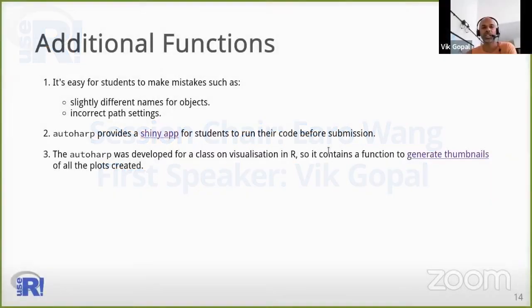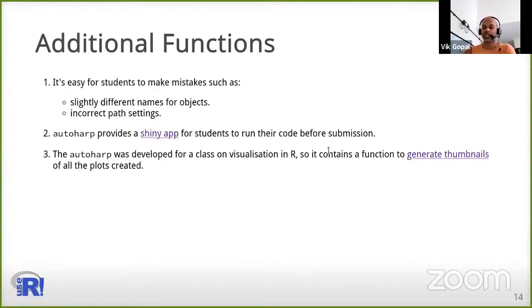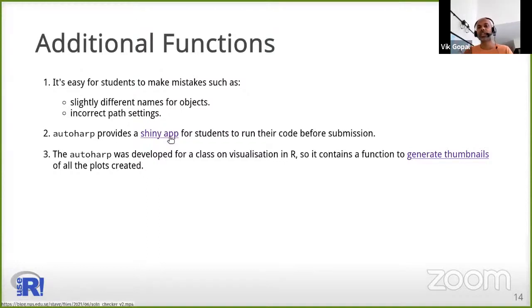For instance, it is very easy for students to set slightly different names for the functions or objects that we ask for. So what we do is the AutoHub package provides a Shiny app for students to run their code before they actually submit it. So this is a kind of a pre-check. It looks something like this.